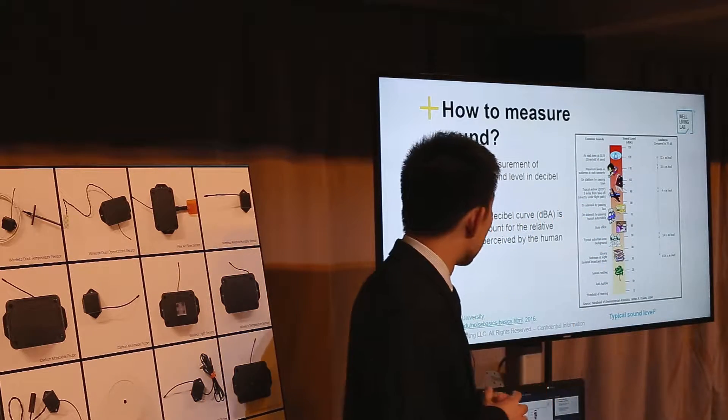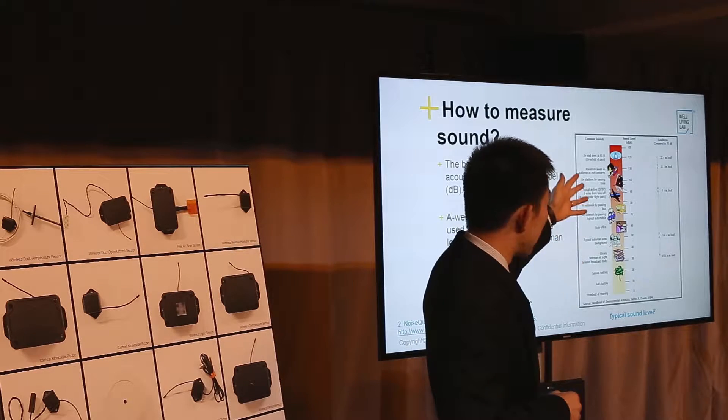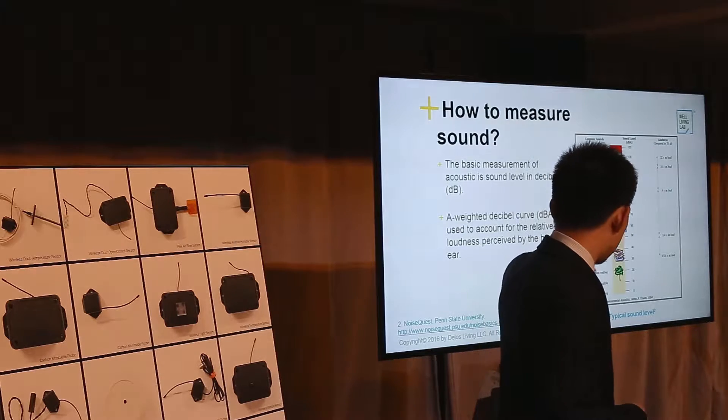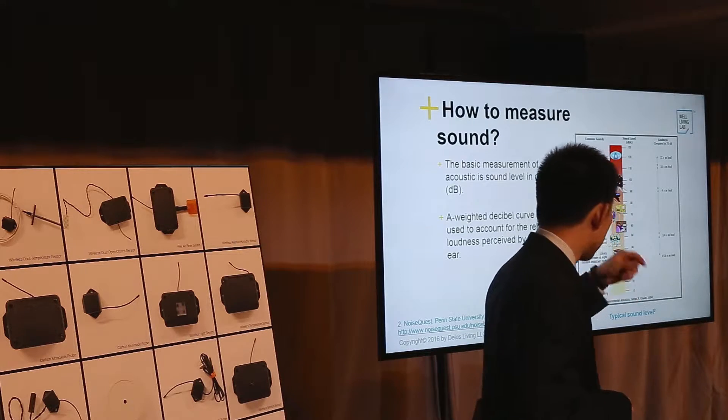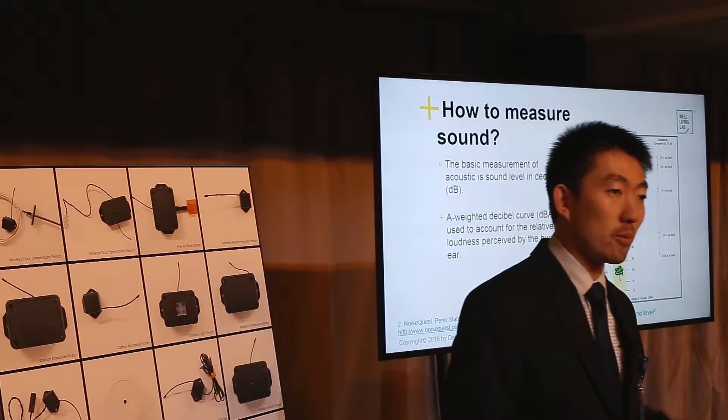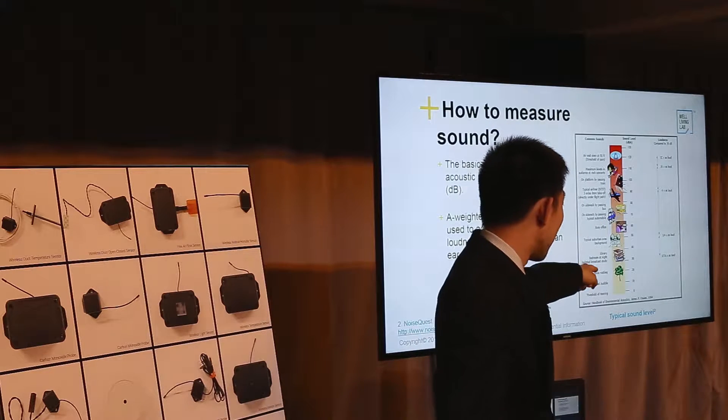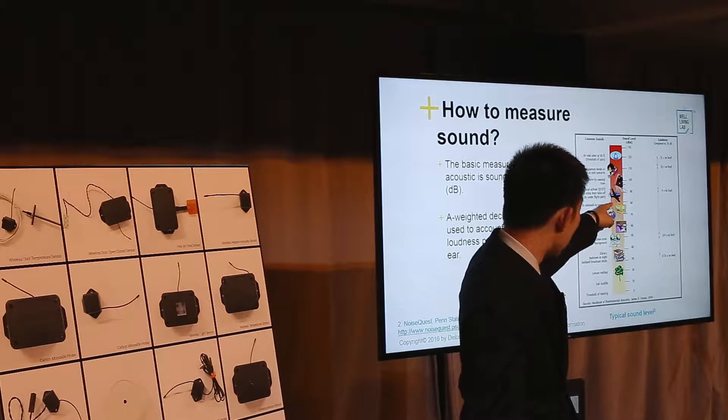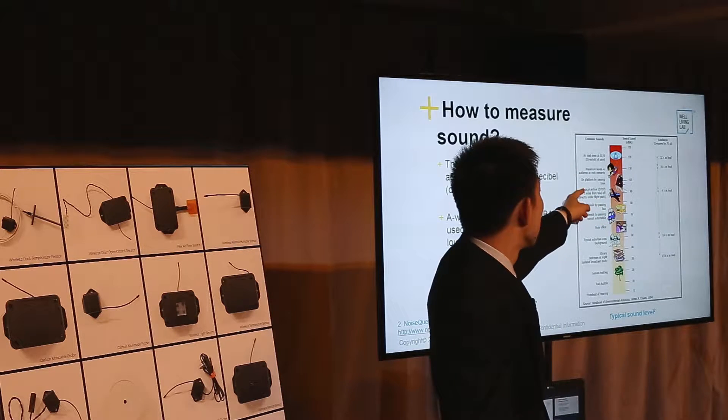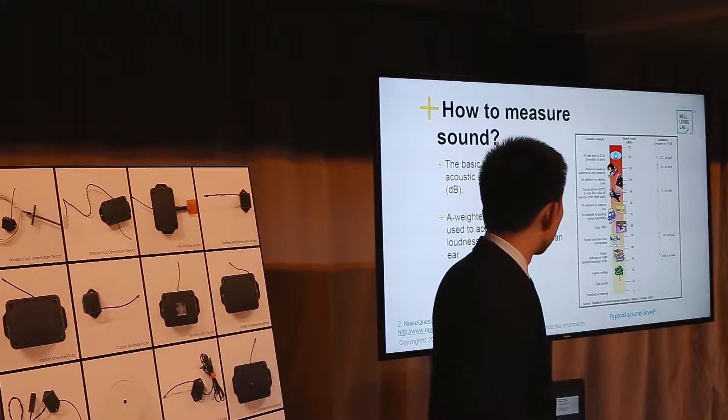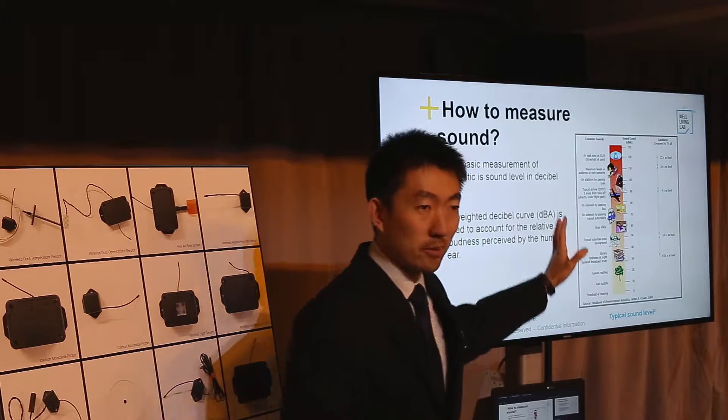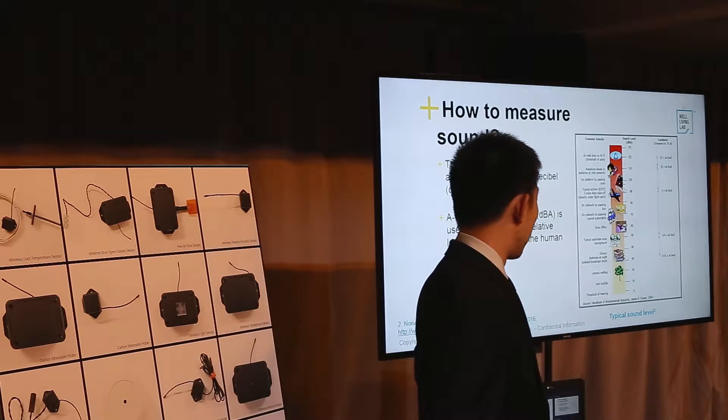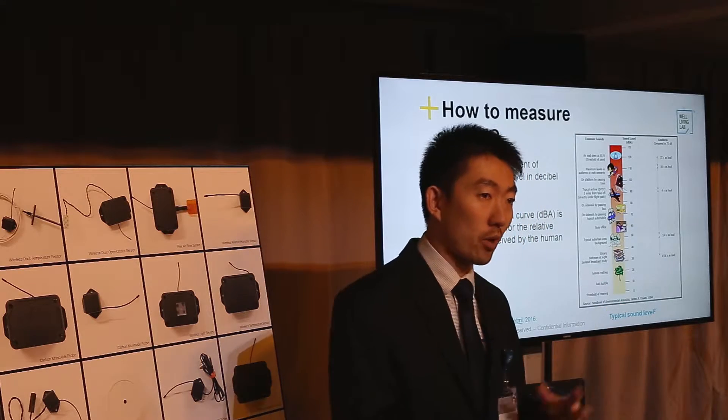These are typical dBA levels for different events. For example, if you hear leaves by wind, that's 20 decibels. If you hear airplane, that's about 90, train, that's 100, and stuff like that. That's the basic, give you a basic sense of decibel levels and how to correlate to your daily life.